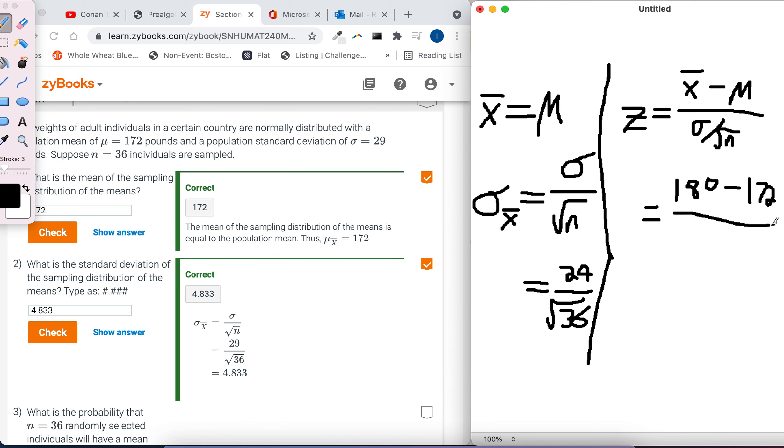The population mean is said to be 172. So from the first part of the problem, that's what goes up here. And then we already calculated this number right here, right? That's this number right here. It's 29 over the square root of 36, so 29 over 6.